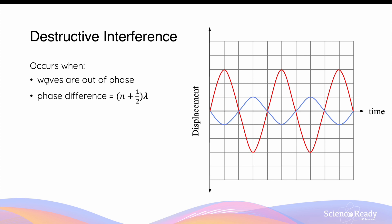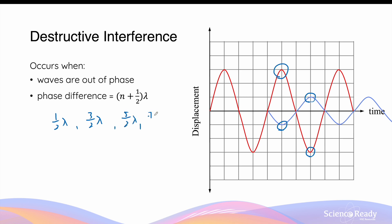Destructive interference occurs when the waves are out of phase. One situation is when they are separated by half a lambda. But it doesn't always need to be a difference of exactly half a wavelength — if you shift the out-of-phase blue wave forward by another half wavelength, the crest of the red wave and the trough of the blue wave still align and therefore undergo destructive interference. So whenever the phase difference follows the rule of (n + 1/2) times lambda — that is half lambda, three-halves lambda, five-halves lambda, and so on — the two waves will undergo destructive interference, where n is 0, 1, 2, 3, etc.